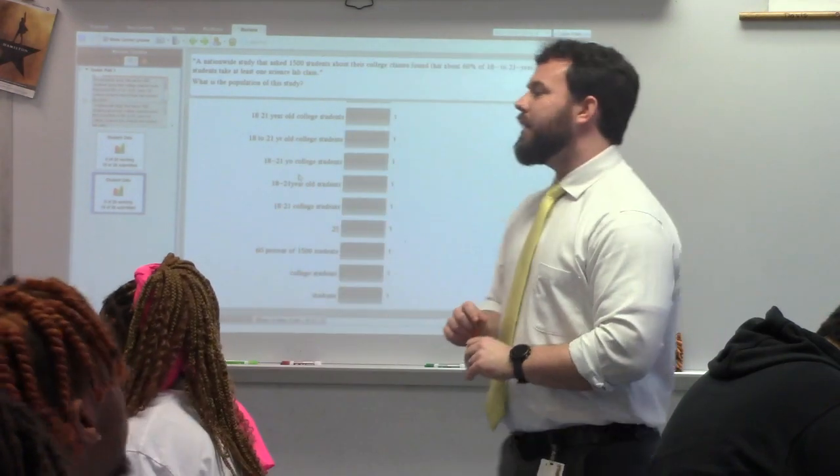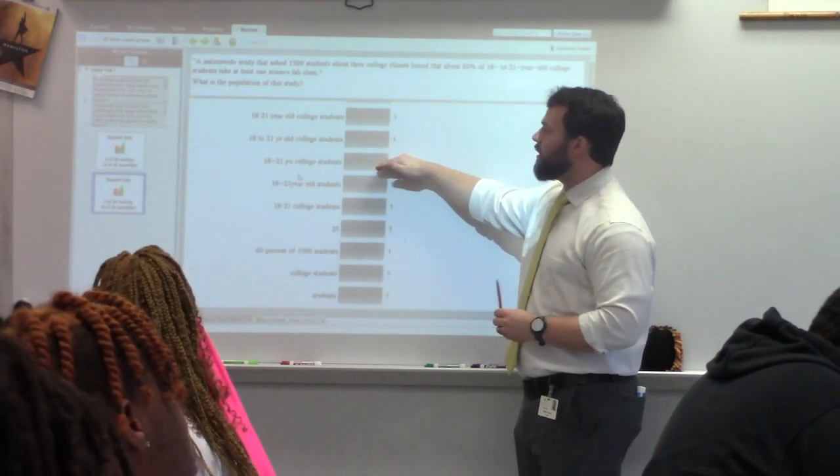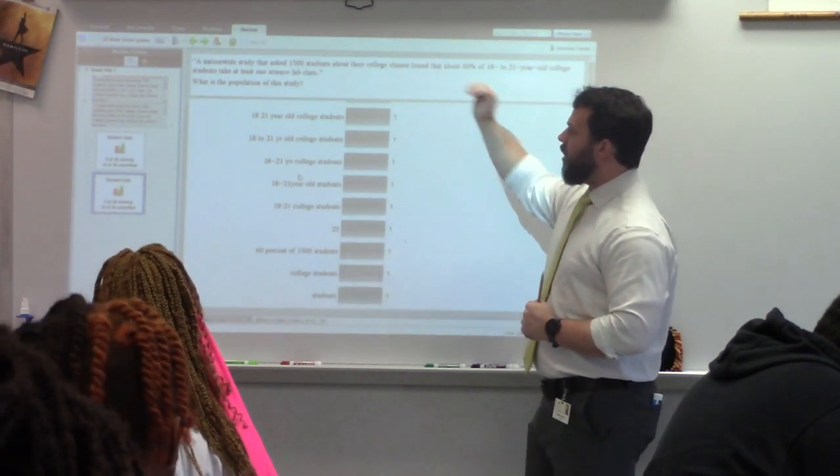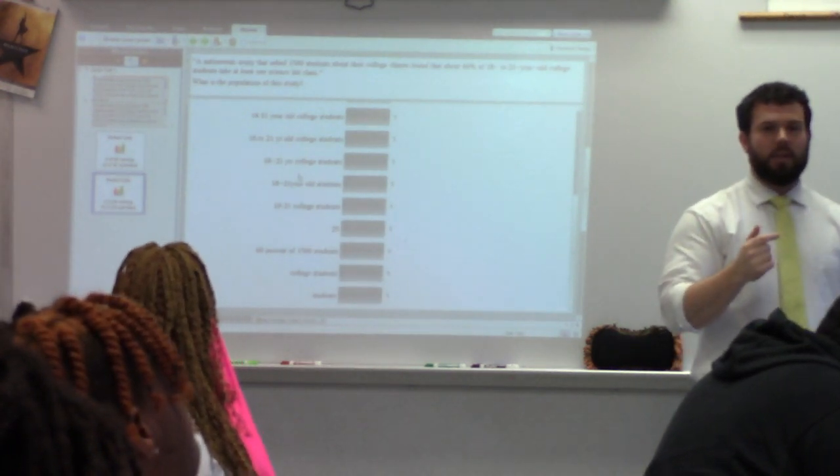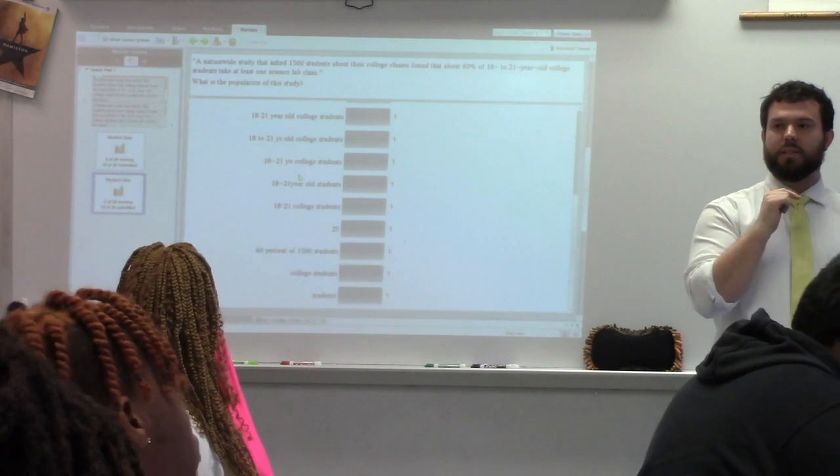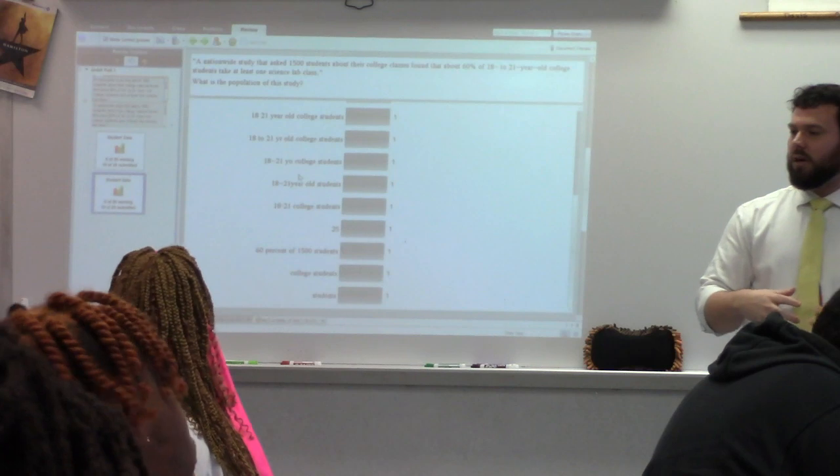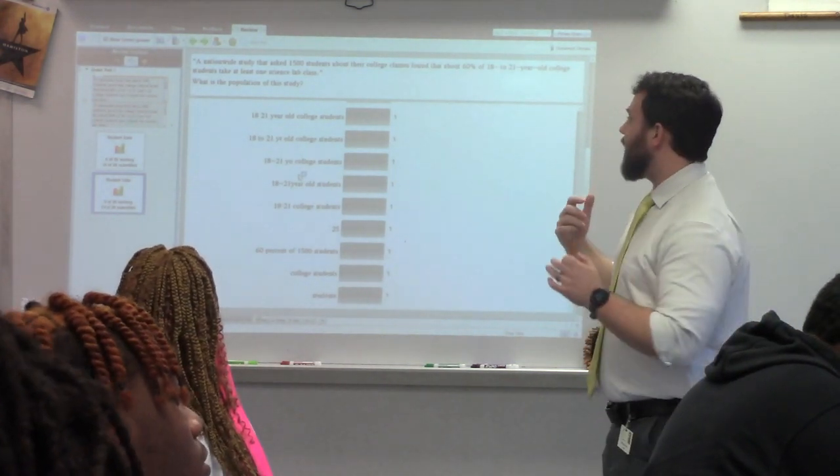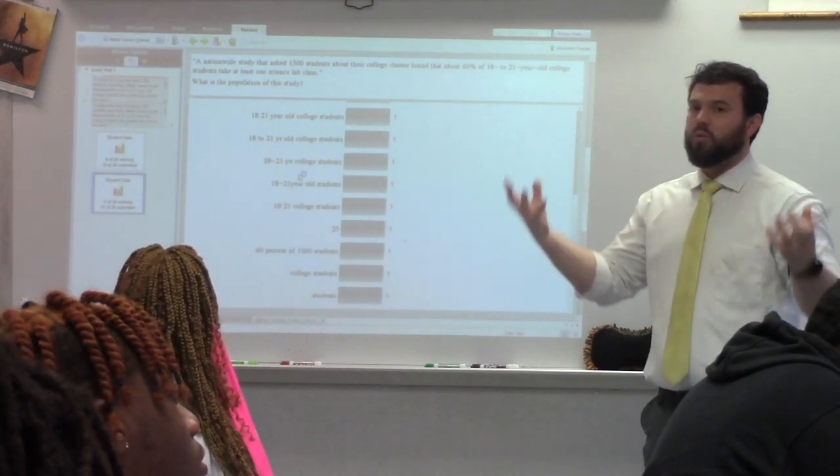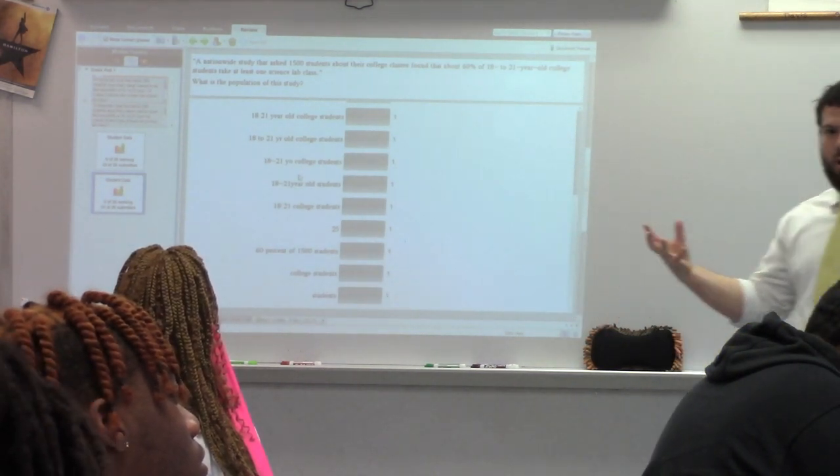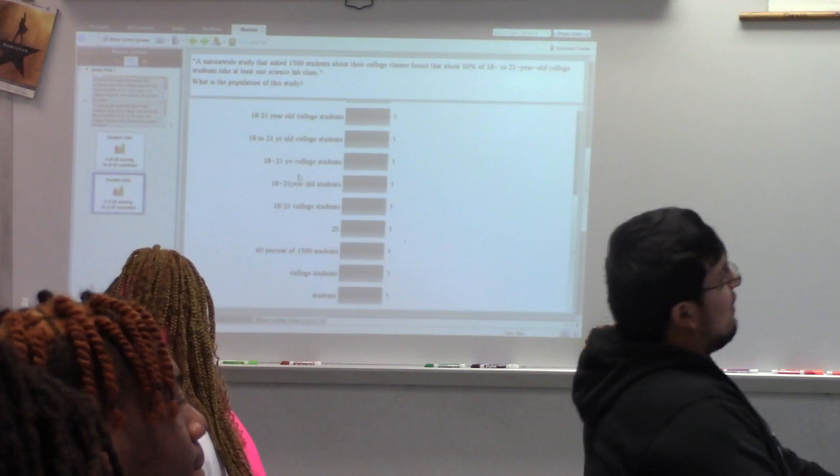So, are we getting data from all 18 to 21-year-old college students? Or are we getting data from all those 1,500 students? 1,500. So, the data we're getting is from the 1,500. So, the 1,500 is the sample. The 1,500 students, the 1,500, 18 to 21-year-olds in college, that's the sample, and we're getting that sample from what bigger group? All 18 to 21-year-olds in college. We've got to pay attention to that.